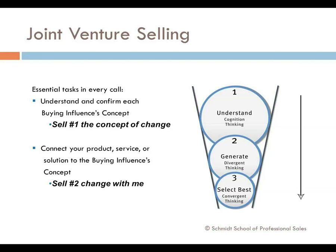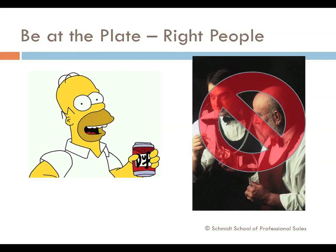We don't want that message to go to just anyone. You really need to make sure you're talking to the right people, because if you're not talking to the right people, you don't even have a chance to hit the ball. I'm going to use a drinking analogy here — and these are stereotypes. When you're talking with people, you want to make sure you're talking to decision-makers and not necessarily the users of your product or service.